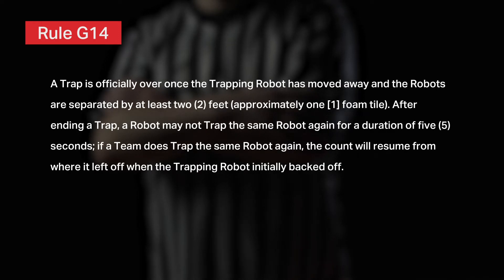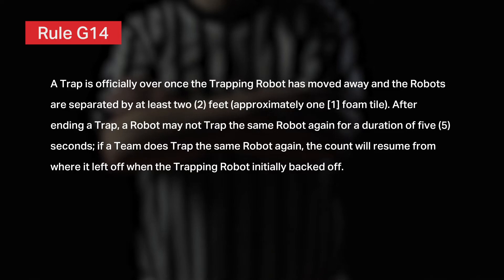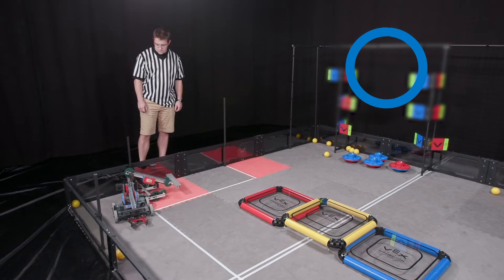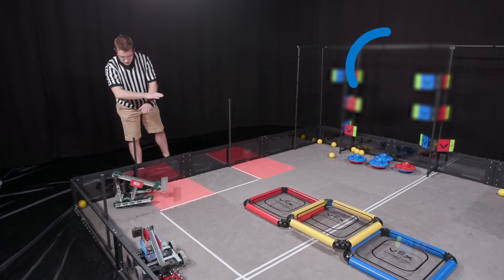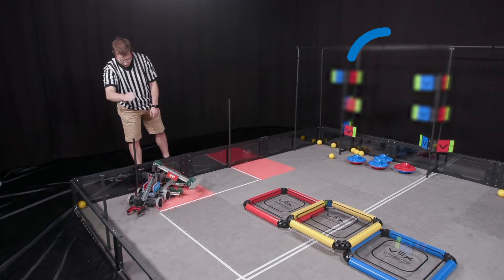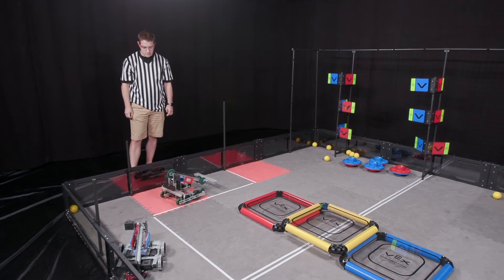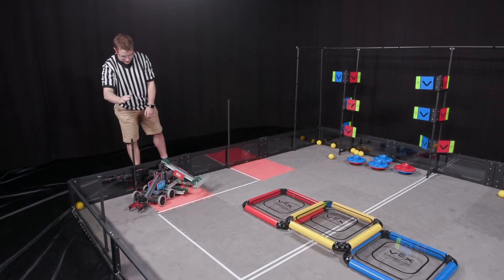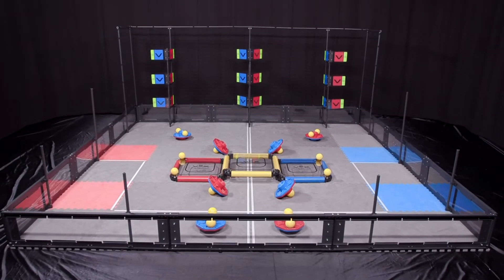A trap is officially over once the trapping robot has moved away and the robots are separated by at least two feet, or approximately one foam field tile. After ending a trap, a robot may not trap the same robot again for a duration of five seconds. If a team does trap the same robot again, the count will resume from where it left off when the trapping robot initially backed off. There should be no confusion that the offending team has either not satisfied their five seconds or has not backed away far enough.